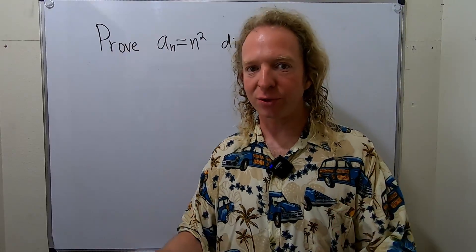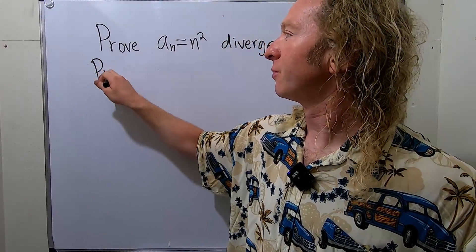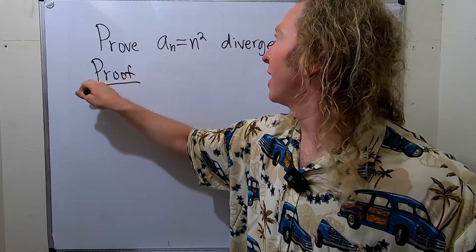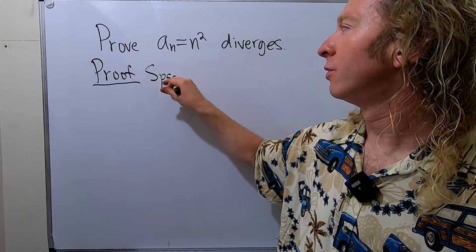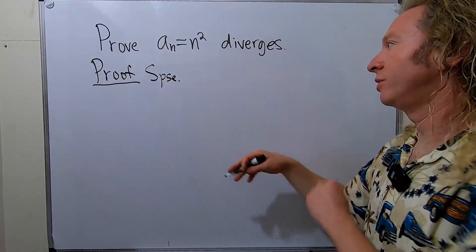We're going to do a proof by contradiction. We'll start by assuming that it actually converges. So, suppose to the contrary that a_n = n² converges.